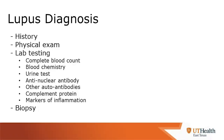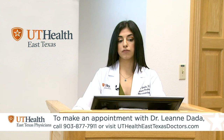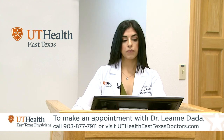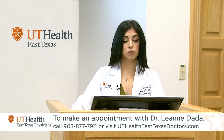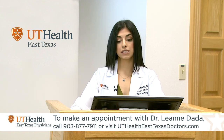We diagnose lupus based on history, physical exam, and lab testing. We look at different parameters of patients' organs to make sure there is no immune-mediated damage, including complete blood counts, blood chemistry, and urine tests. We also look at the anti-nuclear antibody, which is common in patients with lupus, as well as other more specific autoantibodies, complement proteins, and markers of inflammation. If an organ is involved, we will often obtain a biopsy to see the extent of involvement.